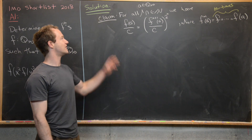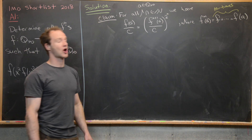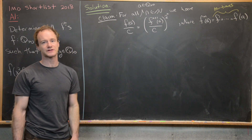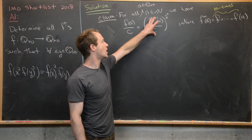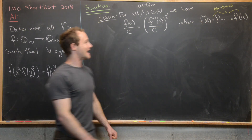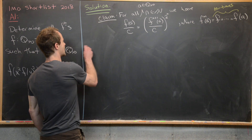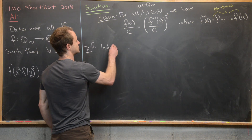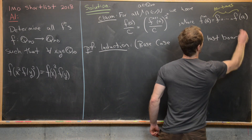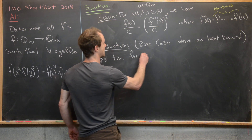From this exploration we arrive at the following claim: for all positive rationals a and natural numbers n, f(a/c) = [f^(n+1)(a/c)]^(2^n), where f^m denotes f composed with itself m times. The base case was verified during exploration. We now prove this by induction.